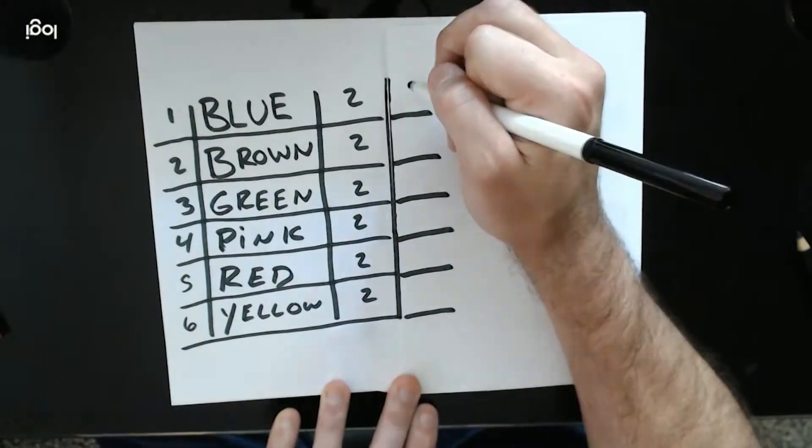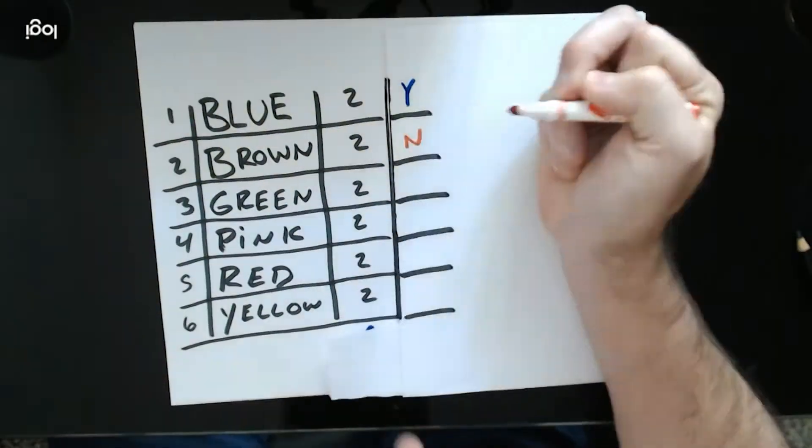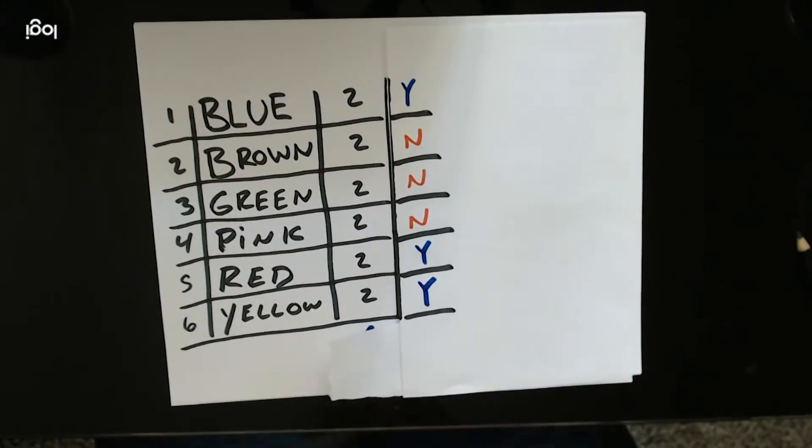By adding another column, more data can be added, such as if a piece of chalk is a primary color or if a piece is broken.